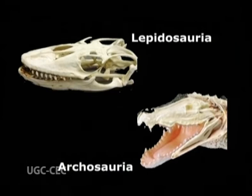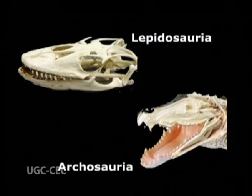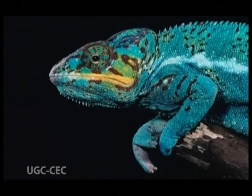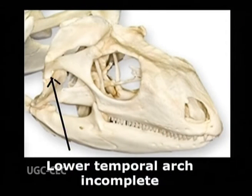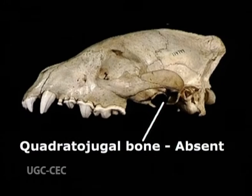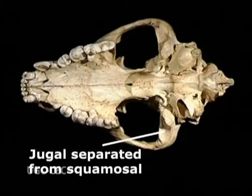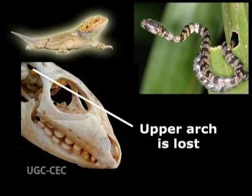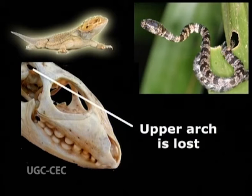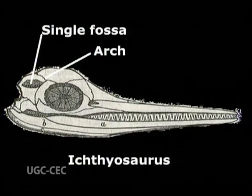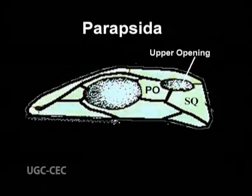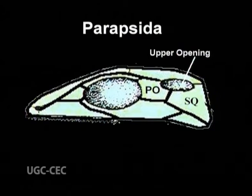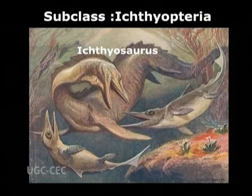This represented the most primitive condition found in reptiles, resembling that in early amphibians. It is still seen today, often in a modified form, in the Chelonia, which are hence placed under Anapsida. In more advanced groups, fossae bounded by bony arches appear in the temporal region, enabling the jaw muscles to bulge and facilitating their action. This is seen in Lepidosauria and Archosauria, perhaps the most successful groups of reptiles.